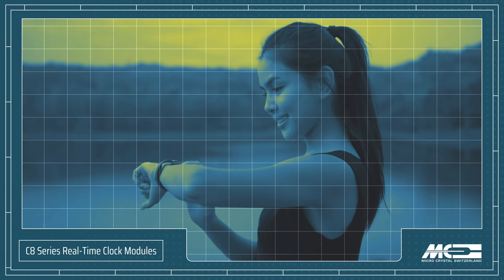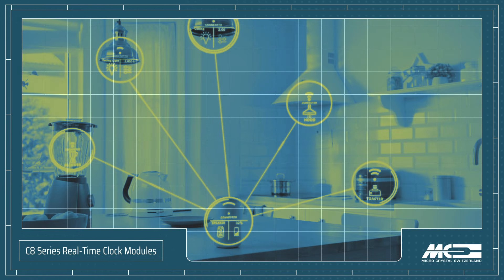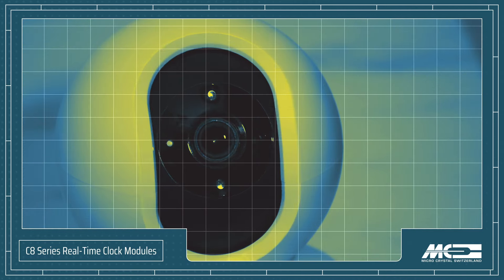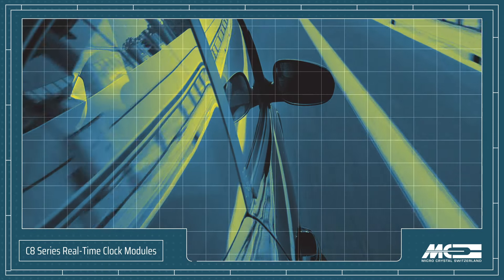MicroCrystal C8 Series real-time clock modules feature an ultra-small package that helps enable smaller and lighter designs for wearables, portables, IoT, metering, healthcare, automotive, and industrial applications.